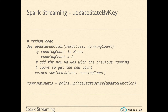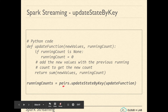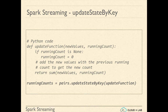We have defined an update function. This update function is applied on a DStream containing word-comma-1 pairs, as in the earlier hands-on. The update function will be called for each word, with new values being a sequence of ones from the word-comma-1 pairs, and the running count having the previous count. The update function takes two arguments: new values and running count. If the word appears for the first time in the input data stream, its running count will be none. If running count is none, the update function sets it to zero. When the same word appears for the second time, new values will have a sequence of ones and running count will be zero. It adds the new values to the previous count to get a new count for that word.